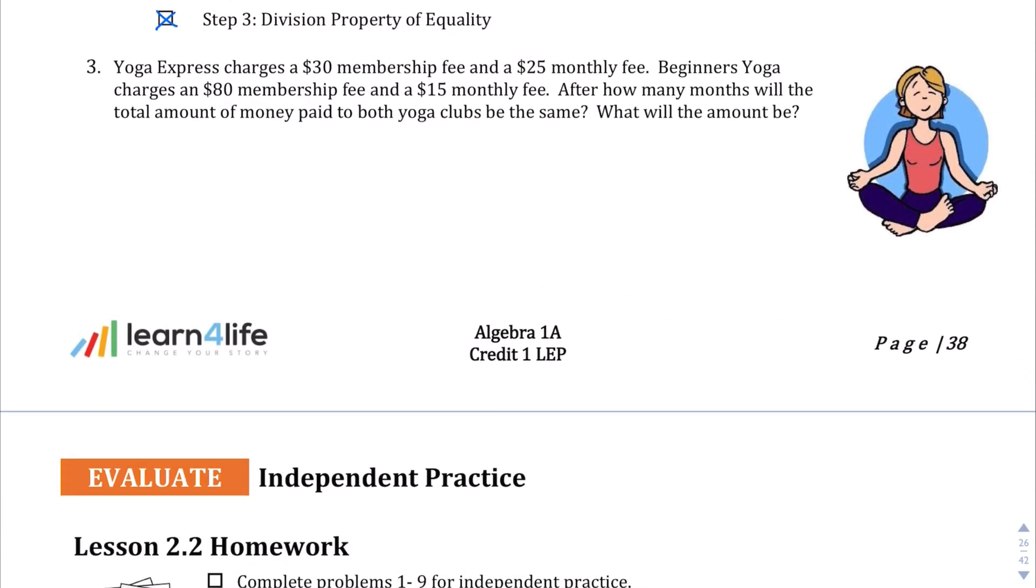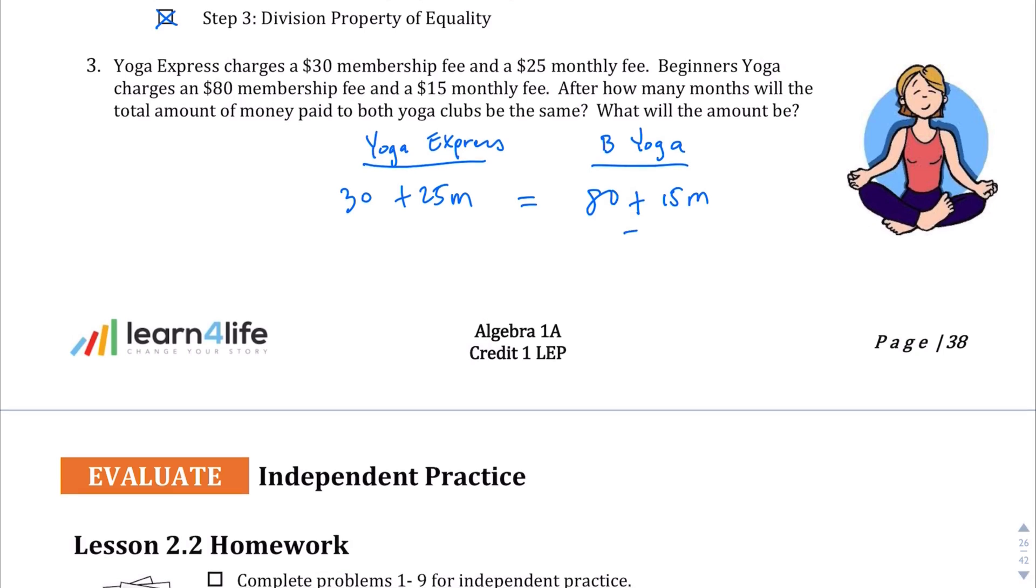Yoga Express charges a $30 membership fee and a $25 monthly fee. Beginners Yoga charges an $80 membership fee, so it's higher, but their monthly fee is lower at $15 per month. How many months will the total be the same? We want to know when these are equal, so I'm going to solve this equation here and find when Yoga Express is equal to Beginners Yoga in terms of price.